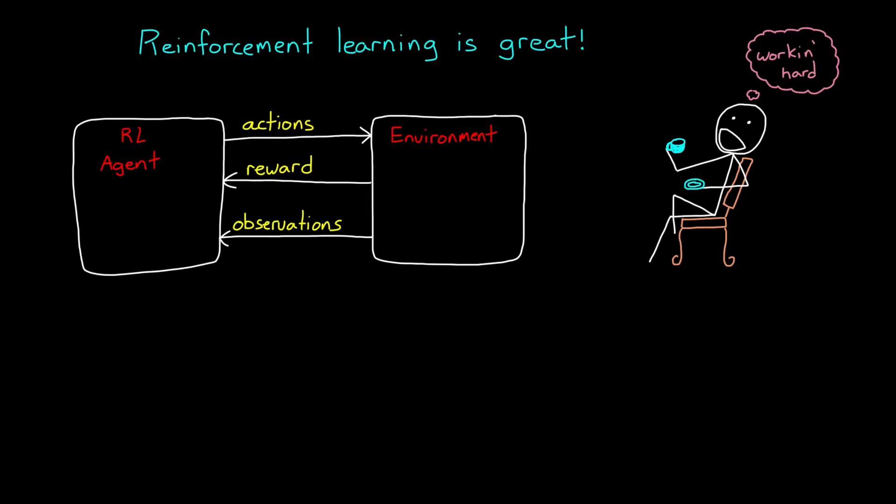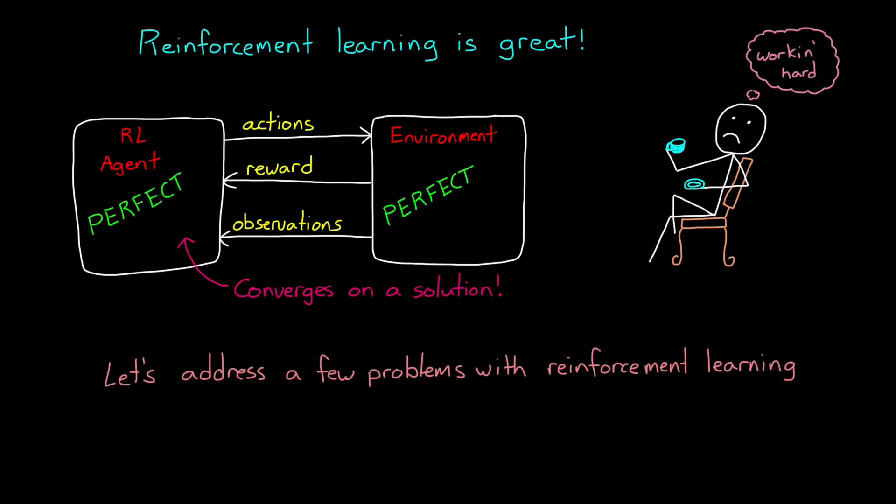Unfortunately, even if you set up a perfect agent and a perfect environment and then the learning algorithm converges on a solution, there are still drawbacks to this method that we need to talk about. So in this video, I'm going to address a few possibly non-obvious problems with RL and try to provide some ways to mitigate them.